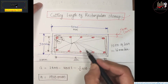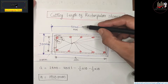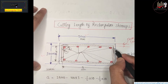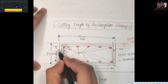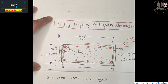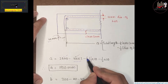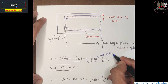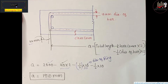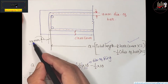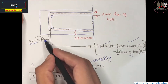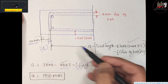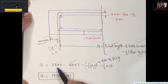We will calculate A. A equals the total length 2000 mm, minus 2 times the clear cover of 40 mm (one on each side), minus 2 times half the diameter of the stirrup bar (10 mm ÷ 2 = 5 mm on each side). After calculation, A = 1910 mm.